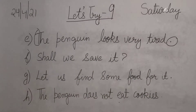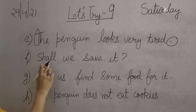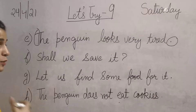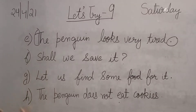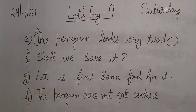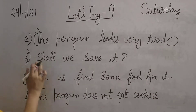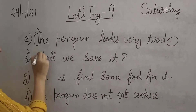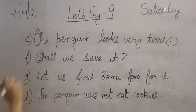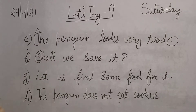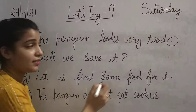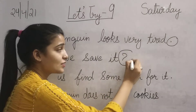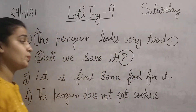The next sentence is: 'Shall we save it?' It means someone is asking the question. The first letter is S and it is capital, so circle the S. And at the end there is a question mark, so circle the question mark also.